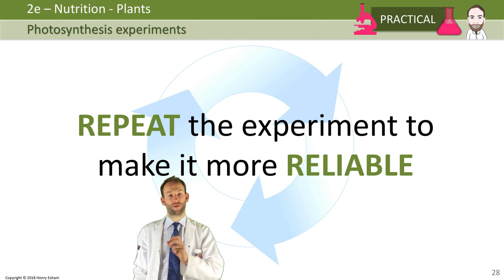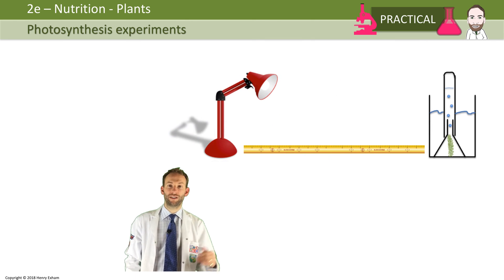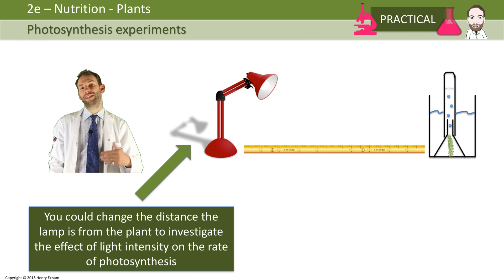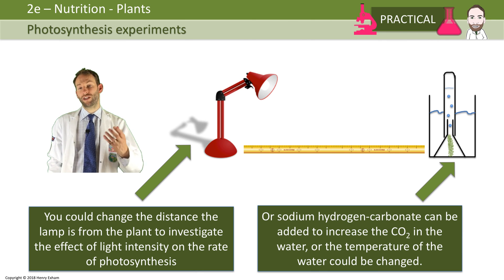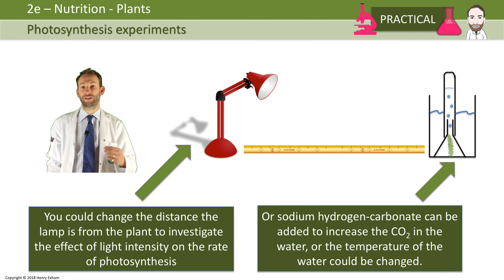Then you could change the distance of the lamp, so you could alter the light intensity. Repeat it again three times at each distance. You should end up being able to generate a graph to show the effect of light intensity on the rate of photosynthesis. You could also change the amount of CO2 in the water for the plant by dissolving more or less sodium hydrogen carbonate into the water, which will change the CO2 level, so you could investigate that as well.